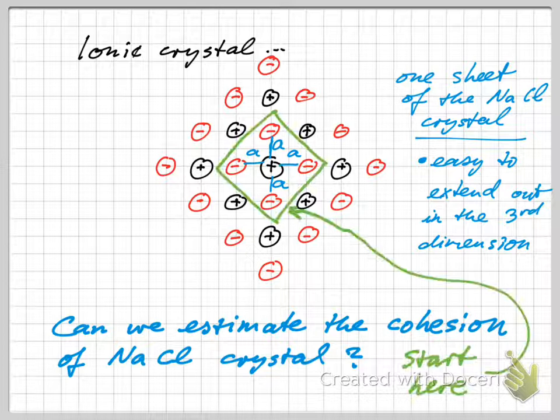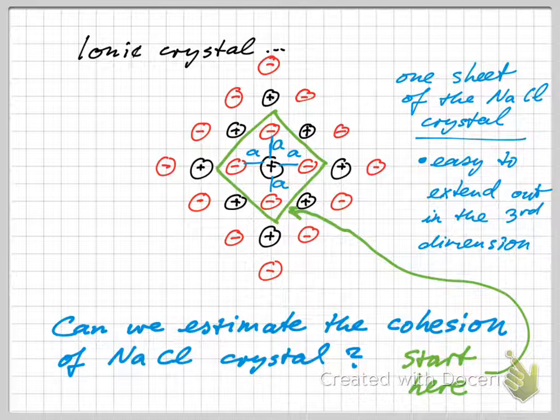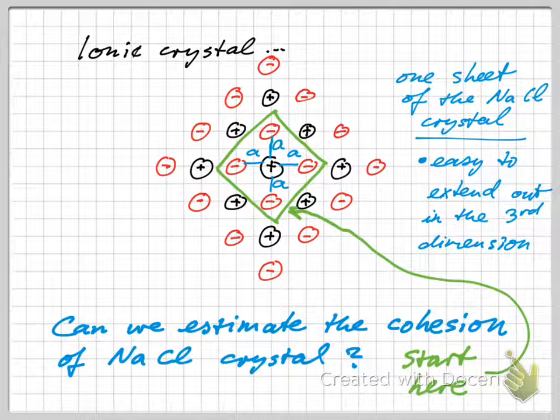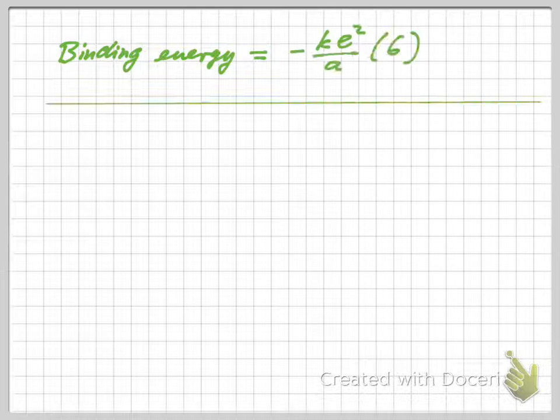We can start here with that center configuration, the positive sodium ion surrounded by the six nearest neighbors. The binding energy of just that is going to be minus ke squared over a times six, because we have six nearest neighbors, the chlorine negative ions. That's that contribution.